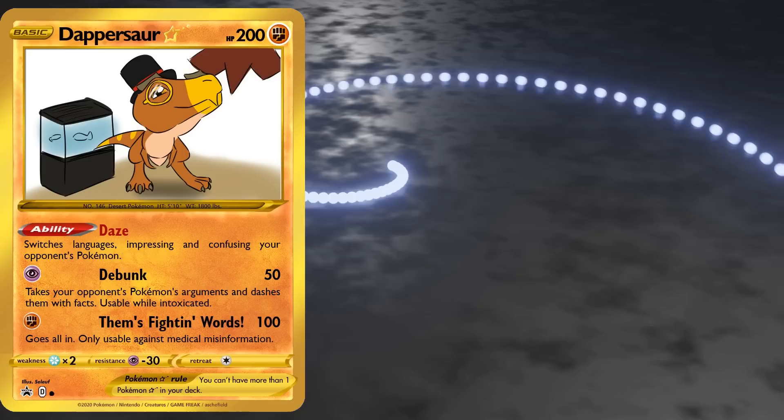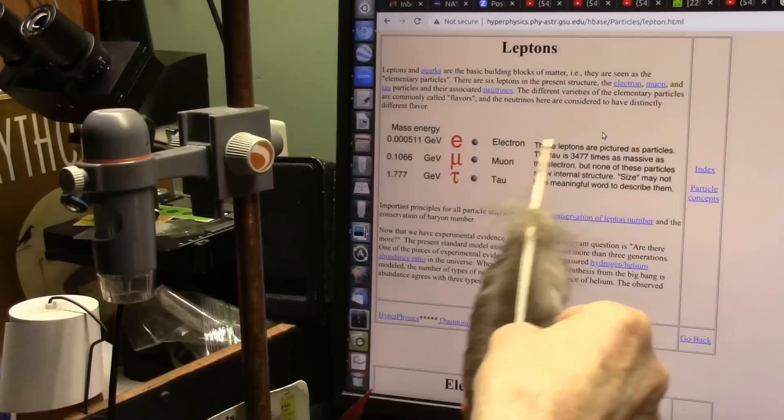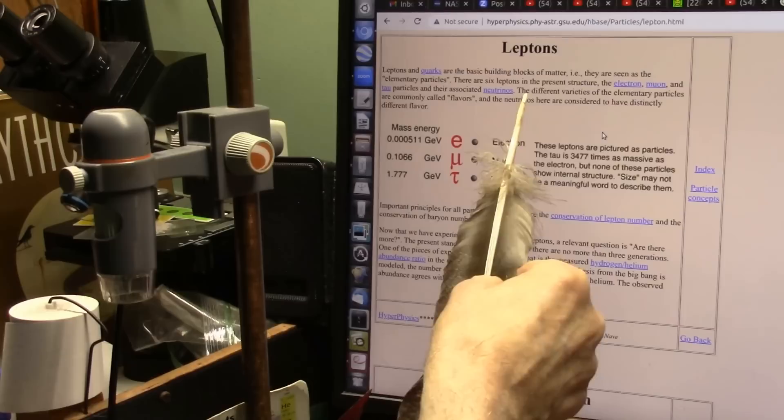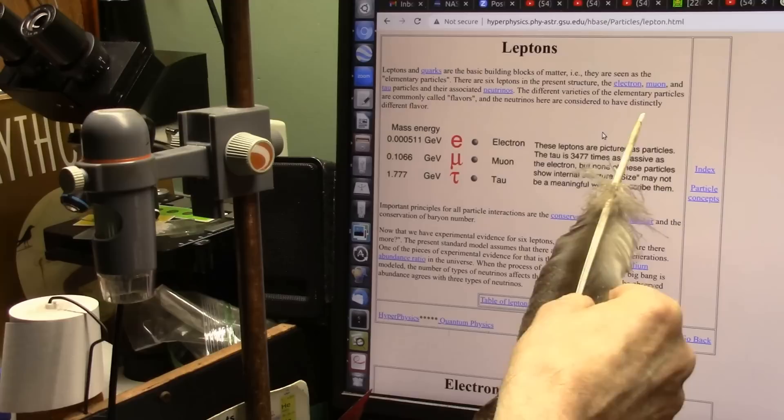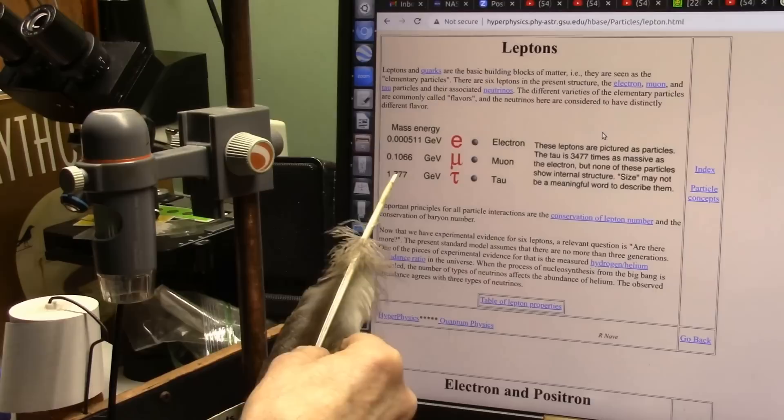Bizarrely, neutrinos can oscillate between different types of neutrinos, which is a big part of why they're so mysterious compared to most other elementary particles, but they can't simply change from being a neutrino into some other non-neutrino type of lepton. Or vice versa. Also no, and for the same basic reasons. The different varieties of the elementary particles are commonly called flavors, and the neutrinos here are considered to have distinctly different flavors.